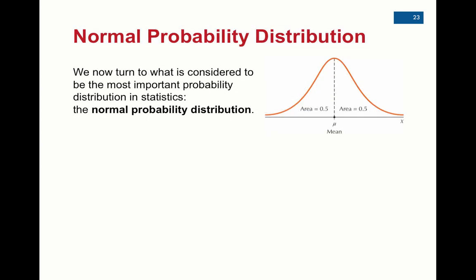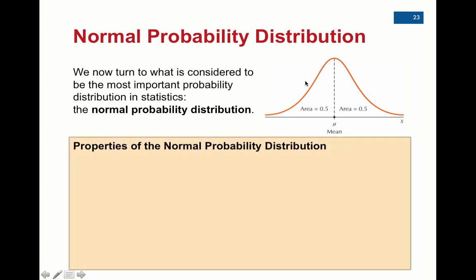But the continuous distribution that we're going to look at the most are normal probability distributions. So this is what we have here, the bell curve, and we're going to get into some important facts that you need to remember about the normal probability distribution. The reason why we spend so much time with the normal probability distribution, though, is because many, many data sets and observations out in the real world end up being what's called normal or bell-shaped.